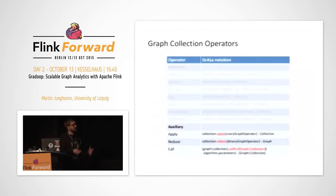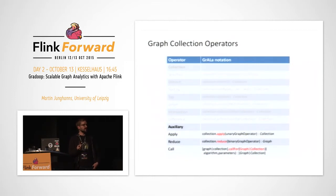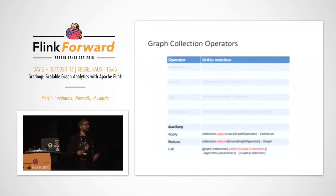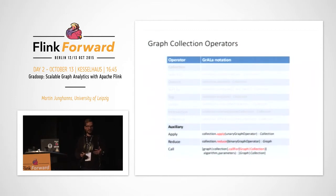The last category are auxiliary operators. The apply operator lets you apply a unary graph operator on a graph collection — for example, applying an aggregate function on each logical graph in your collection. The reduce operator reduces a collection to a single graph, perhaps using the combine operator. The call operator is more generic — like the run operator in Gelly — letting you apply any algorithm that takes a graph or graph collection as input and returns a graph or graph collection.